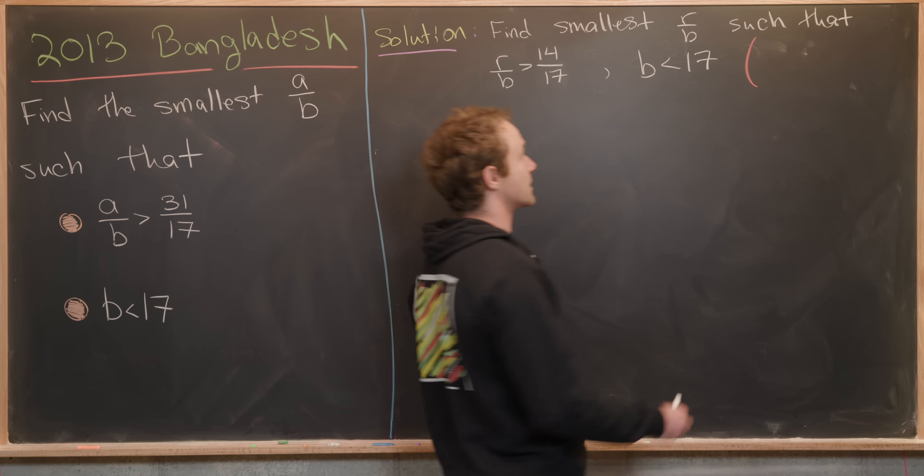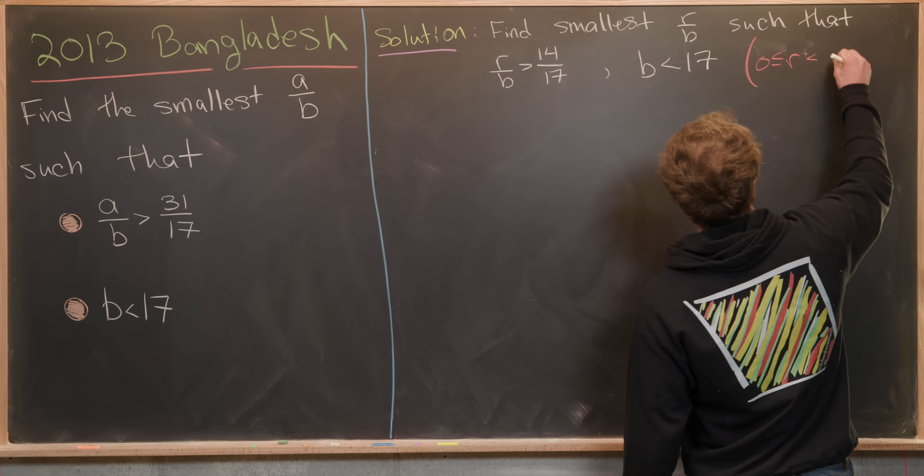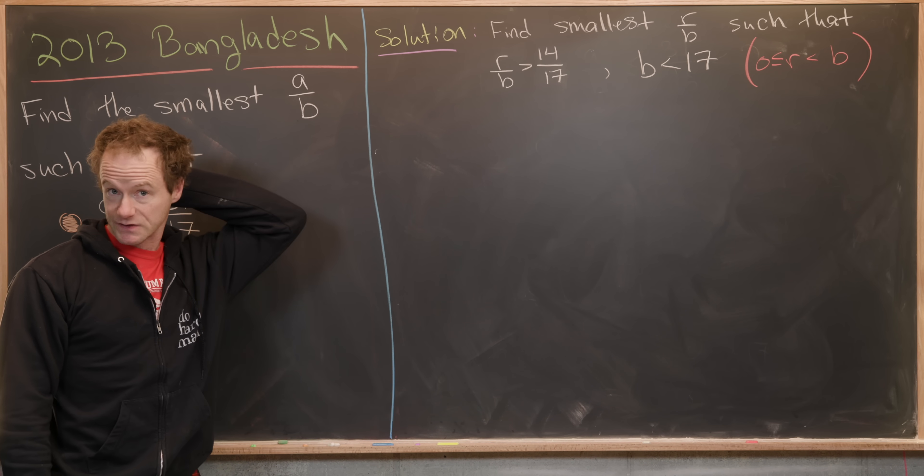So we know that R is between 0 and B, but not including B. That's important to keep in mind as well.